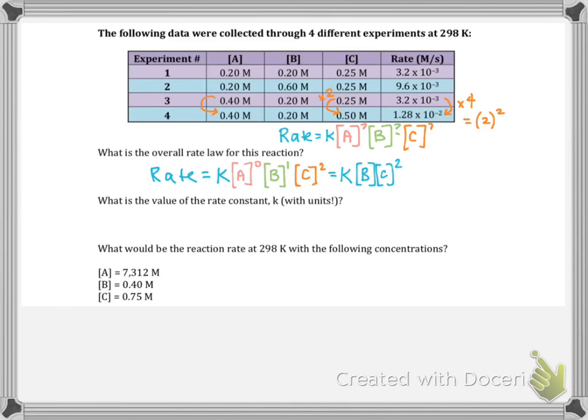So now that we have our rate law, they want us to figure out what the rate constant is. And so we will go ahead and pick our favorite experiment and plug in all of the numbers from that row and solve for K. So we can just take experiment 1, you could use any of them, but we can take experiment 1.